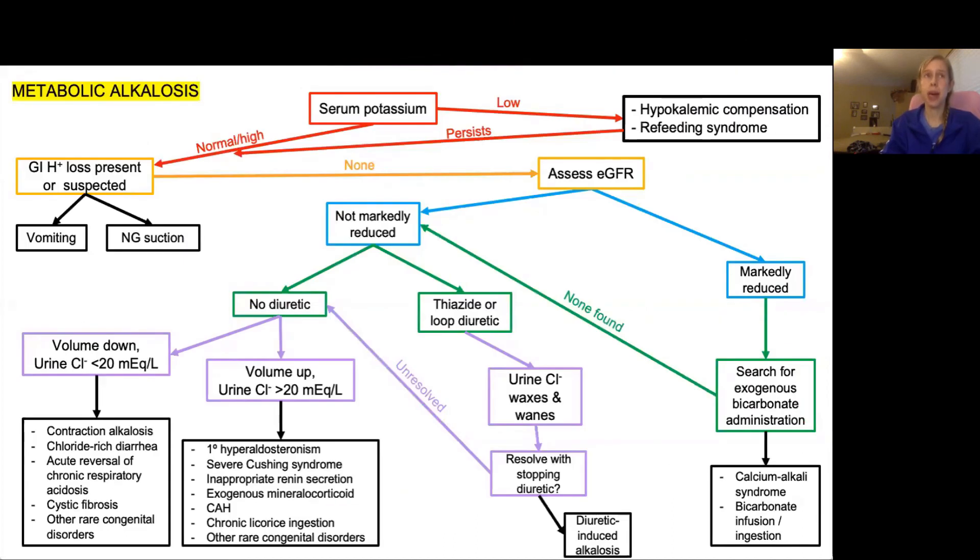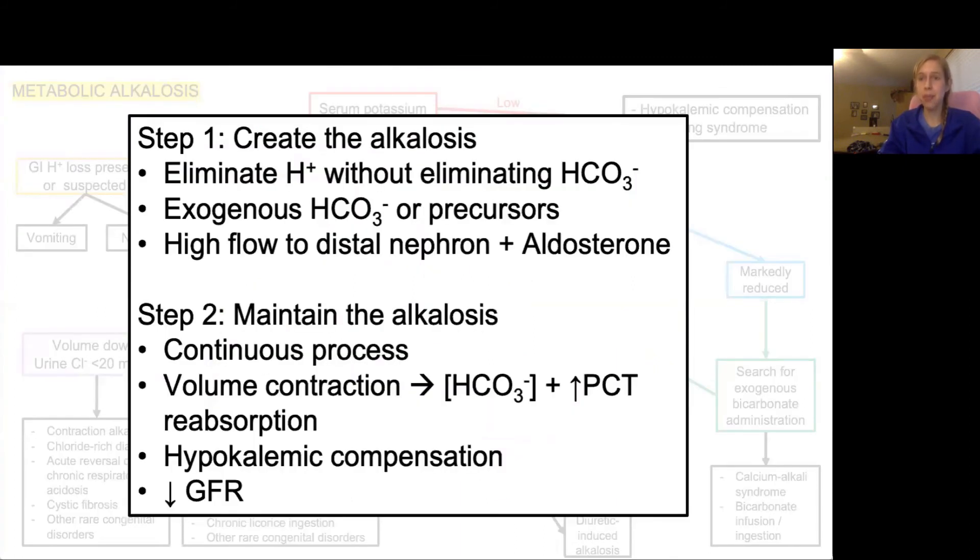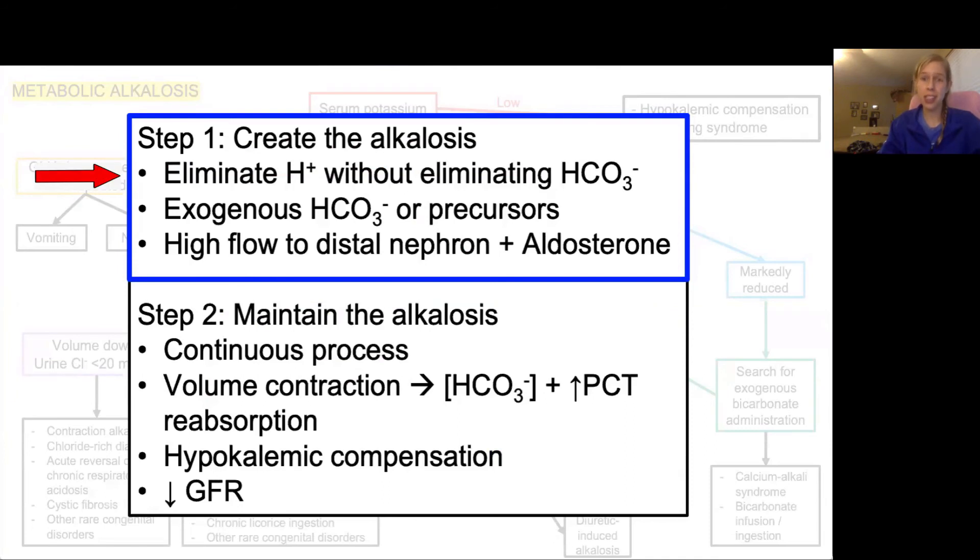So this brings us back to our big, giant, scary map. Hopefully this makes a lot more sense now, and is quite a bit less intimidating. In reality, it breaks down to two big steps. Step one, figure out what is creating the alkalosis. Are you eliminating acid without eliminating bicarb? Is there some source of exogenous bicarbonate or bicarbonate precursors being added to the patient? Or is there something creating a high flow state to the distal nephron while also allowing there to be aldosterone being active?